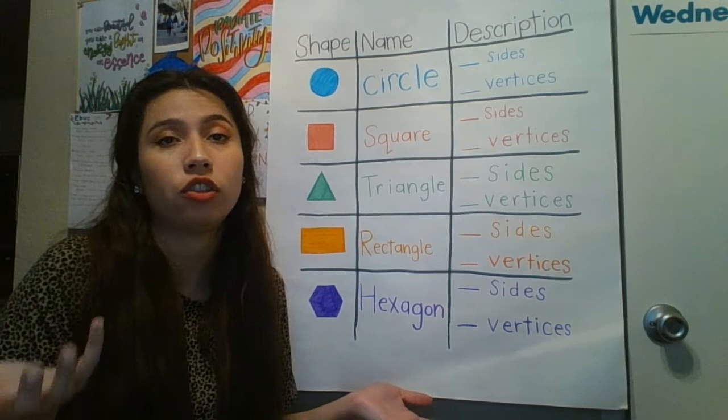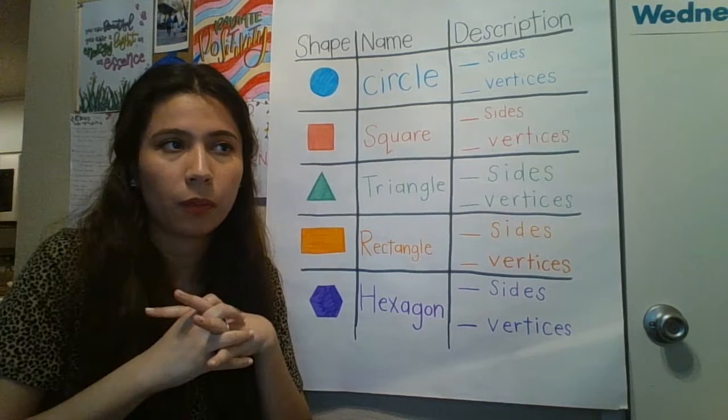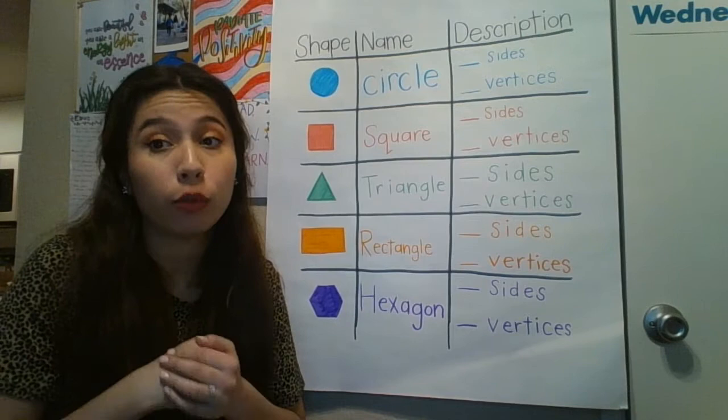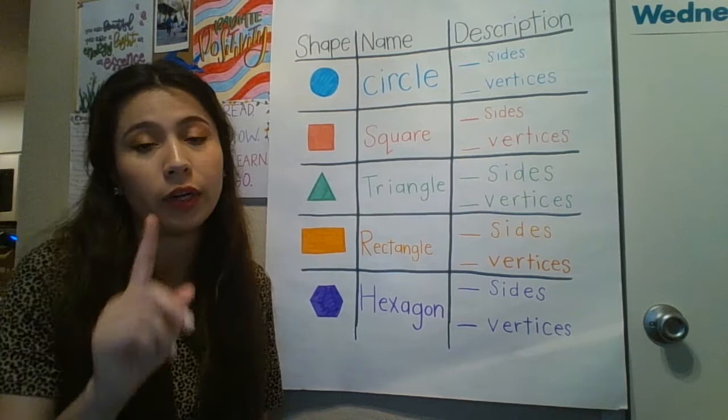Take some time to think about it. A 2D shape and a 3D shape. A 2D shape is flat and a 3D shape isn't. A 3D shape actually takes up space. So today we want to talk about 2D shapes — not 3D, just 2D.